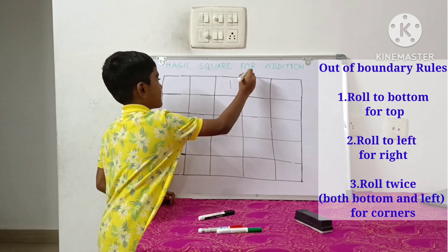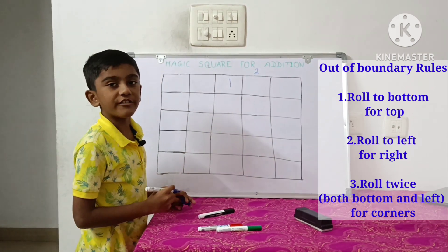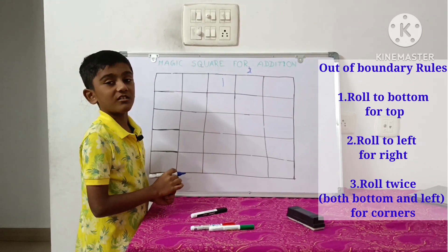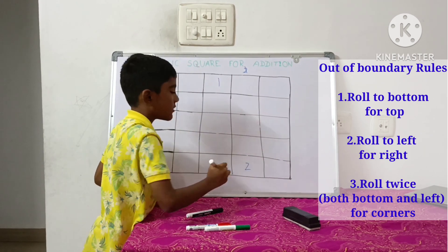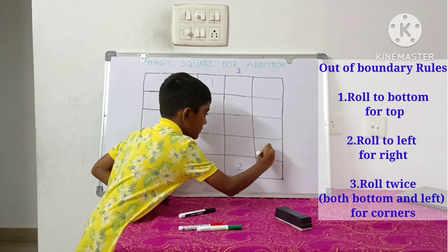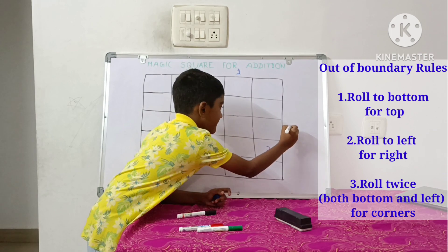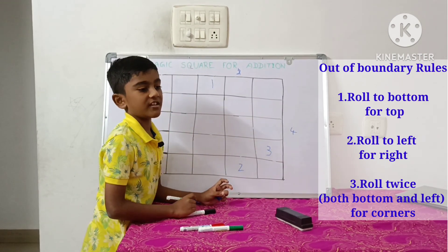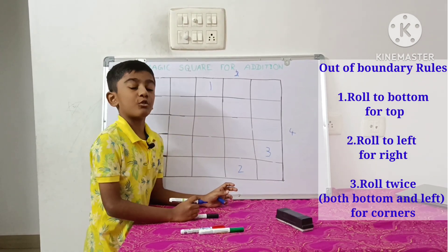Move diagonally. Out of boundary — let's do rolling. Let's roll to the bottom. Move diagonally. Let's roll to the bottom. Move diagonally. Out of boundary — let's do rolling. Let's roll to the left.